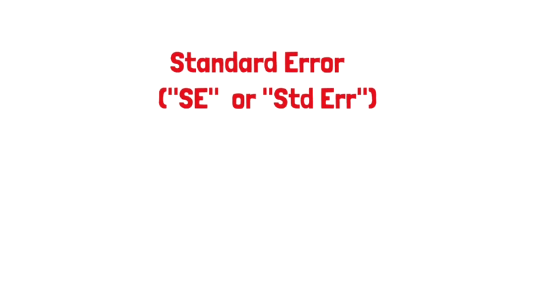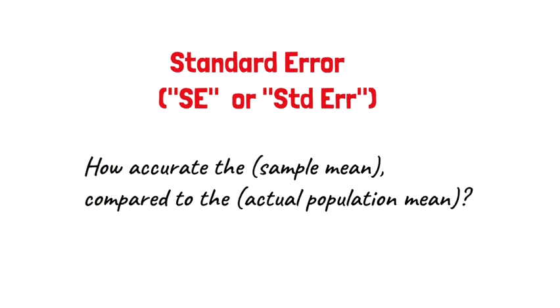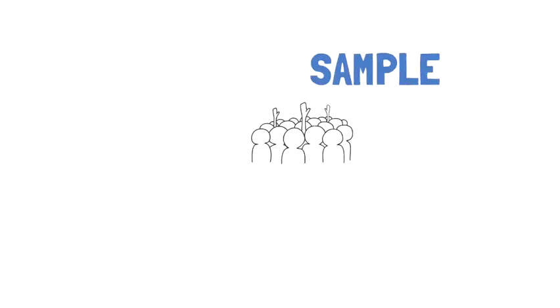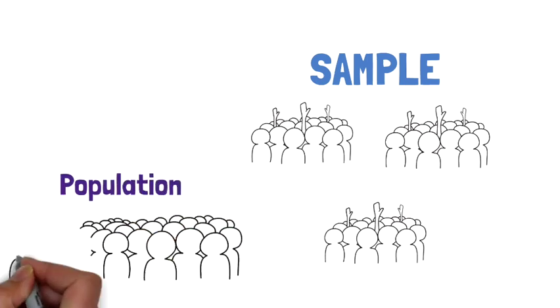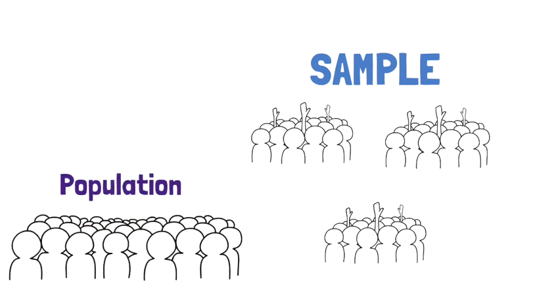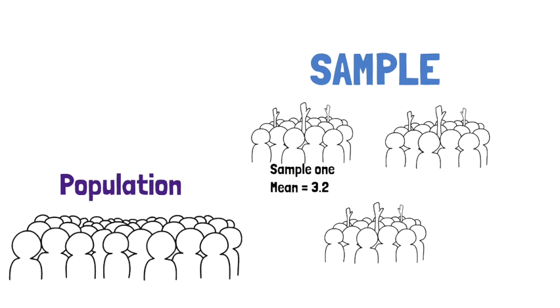Standard error, abbreviated as SE, tells us how accurate the sample mean is compared to the actual population mean. You need to understand samples to understand standard error. In research, a sample is a group of people, items, or any measurable thing taken from a larger population. You then make inferences about the population from the outcomes derived from the sample. For example, if a sample is drawn from the population, the mean could be 3.2.